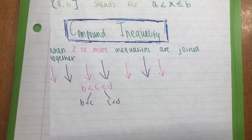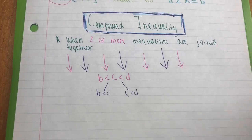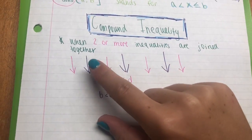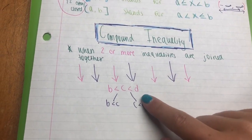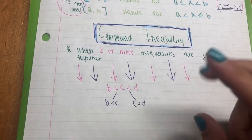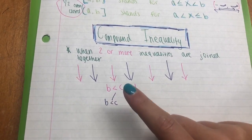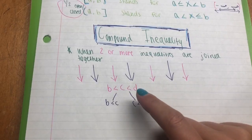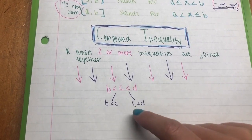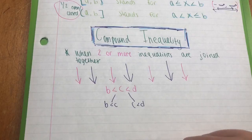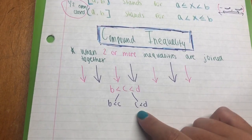The next thing we are going to talk about is compound inequality, which is when two or more inequalities are joined together. Here we have technically one big inequality: B is less than C and C is less than D. We can break this into two smaller inequalities — E is less than C, and C is less than D.